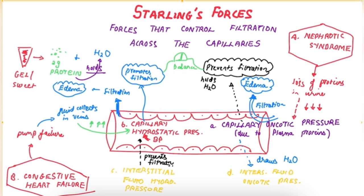To summarize, there are two main forces: the capillary oncotic pressure, which prevents filtration, and the capillary hydrostatic pressure, which promotes filtration. In nephrotic syndrome, loss of proteins in urine results in decreased capillary oncotic pressure and filtration leading to edema. While in congestive cardiac failure, the capillary hydrostatic pressure increases, leading to edema.